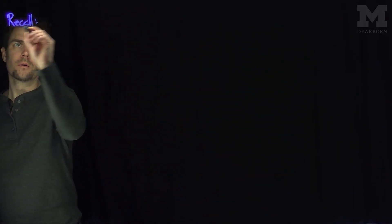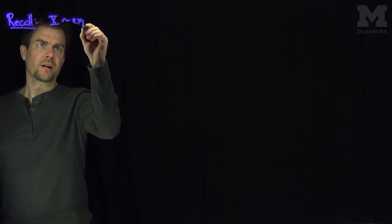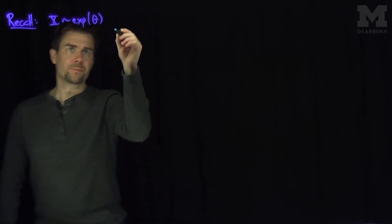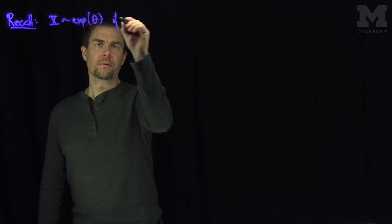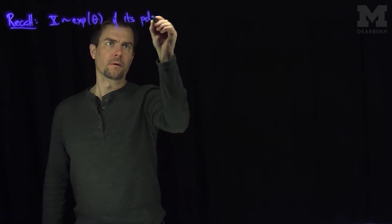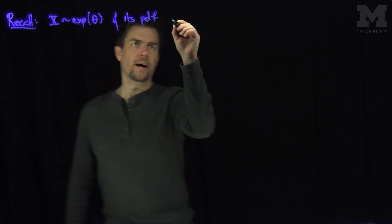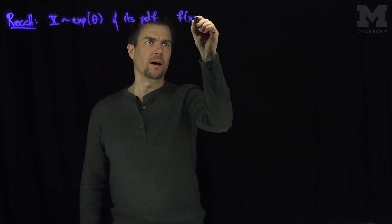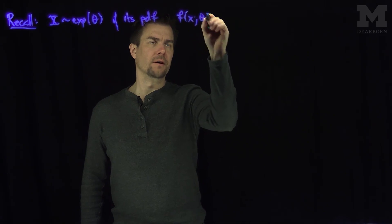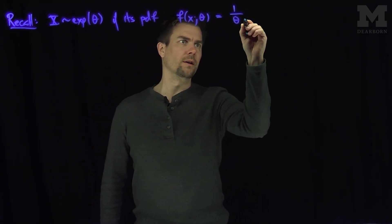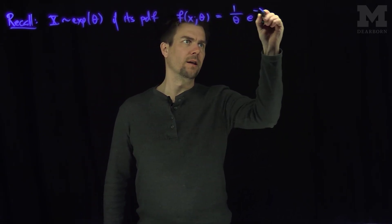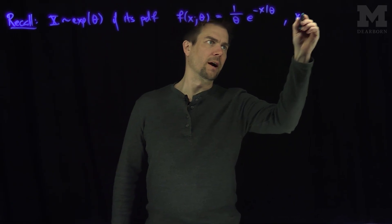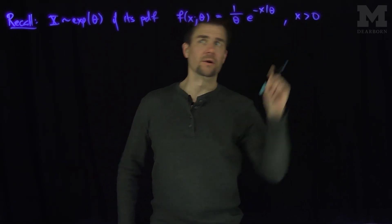Let's recall that X is exponential theta if its PDF has the form f(x; θ) = (1/θ) e^(−x/θ) for x greater than zero.